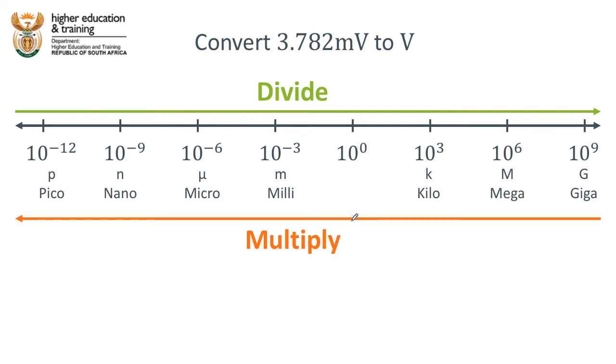In this video, let's take a look at the solution to example number two, which asked us to convert 3.782 millivolts to volts.